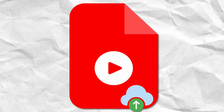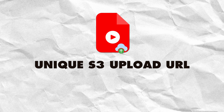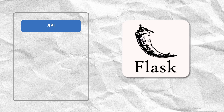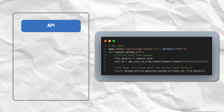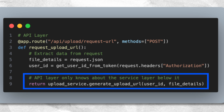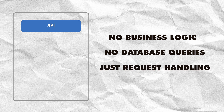When a user tries to upload a video file, the frontend code will need to generate a unique S3 upload URL by sending an HTTP request called 'generate upload URL' to my backend. That request will be received by a layer at the top called the API layer, and its only job is to handle the incoming HTTP requests using Flask. It does that by extracting basic stuff like the request body and the user's authentication token from the request. Once that's done, it delegates the responsibility of generating the upload URL to the service layer. No business logic, no database queries — just request handling.